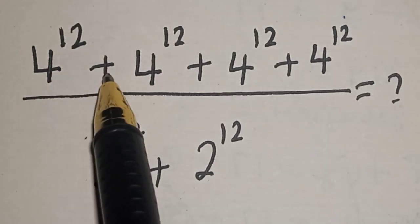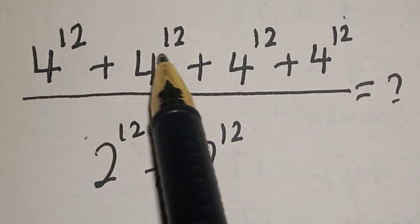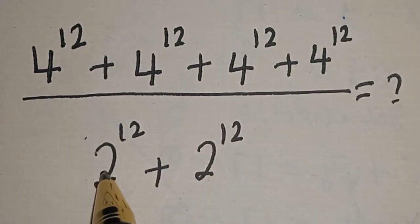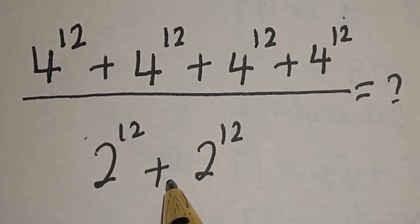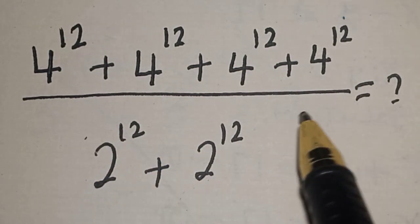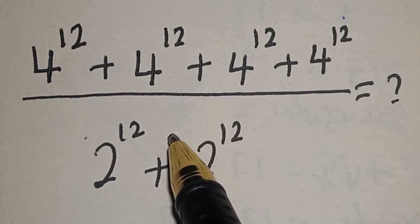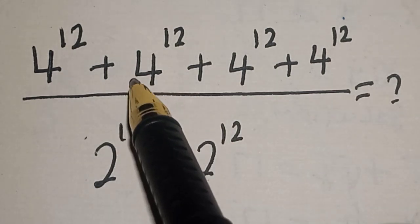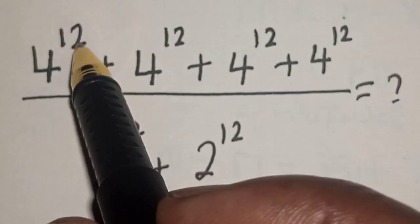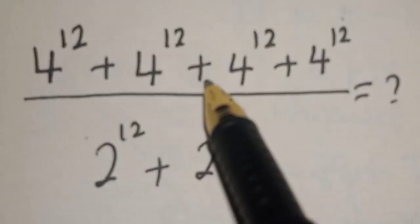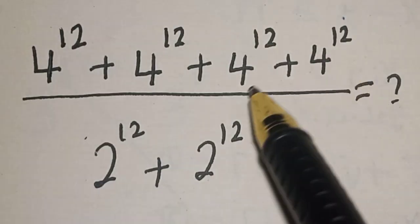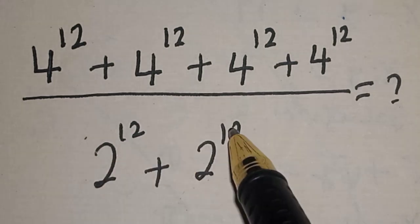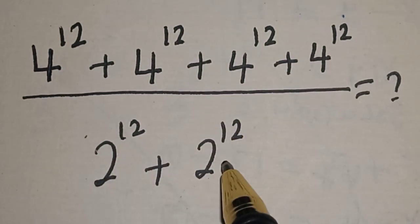In this class, we want to simplify this math problem: 4 to the power 12 plus 4 to the power 12 plus 4 to the power 12 plus 4 to the power 12, all divided by 2 to the power 12 plus 2 to the power 12.